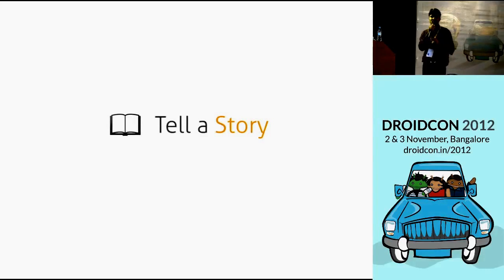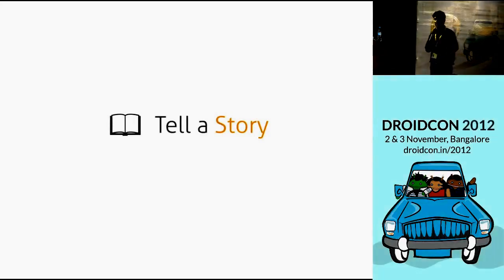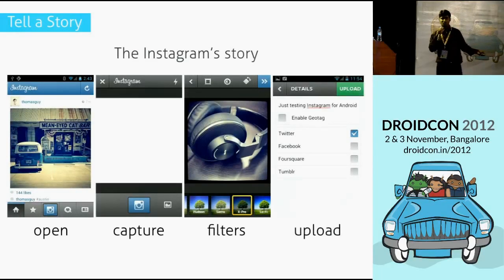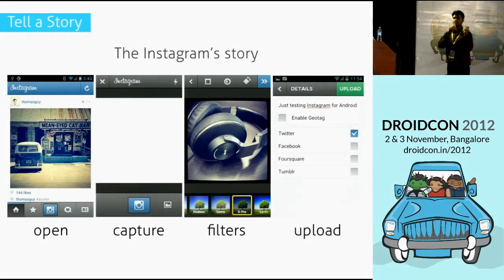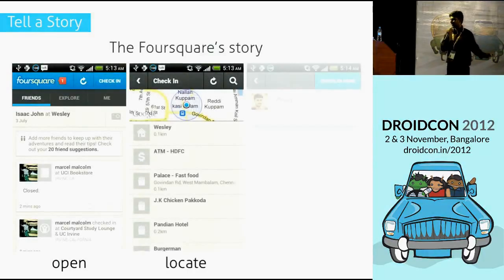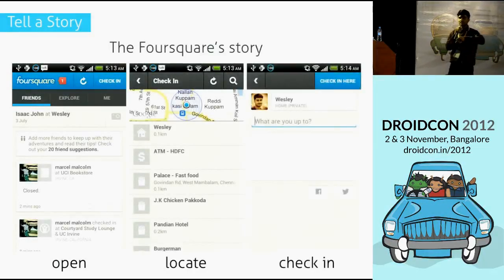Next: telling a story — how to come up with a story within the app itself. Instagram's story is very simple: one, two, three steps. Open, capture, add filters, and upload. Then follow and explore. Those are the coolness factors in the app. Foursquare's story is just as simple: open, locate, and check in. That simplicity is what made the app go viral.